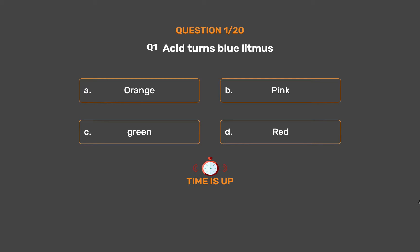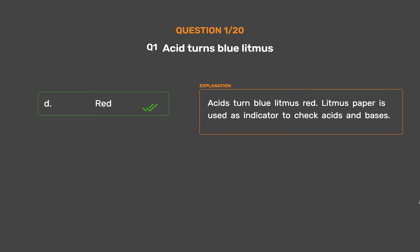The correct answer is Option D: Red. Acids turn blue litmus red. Litmus paper is used as an indicator to check acids and bases.